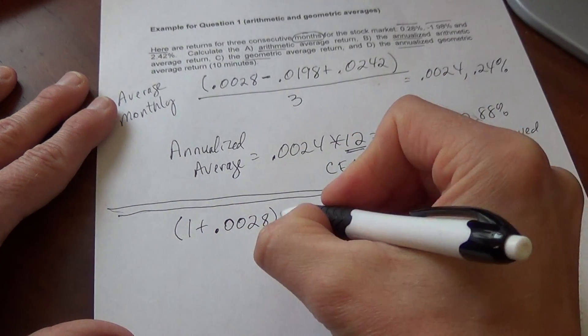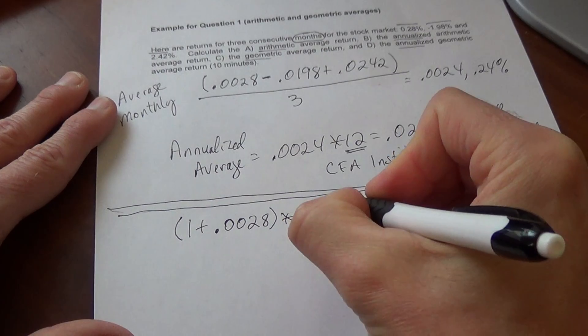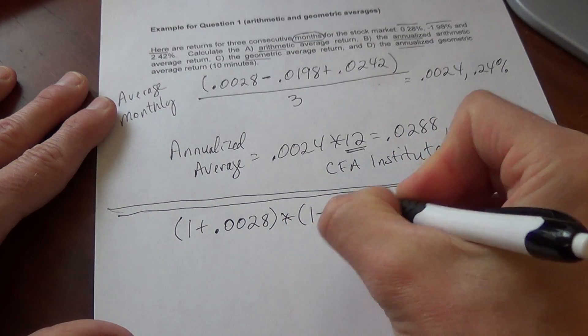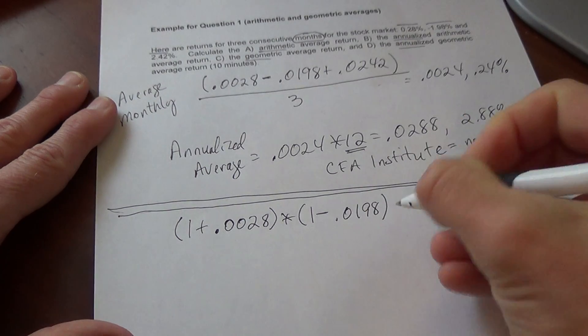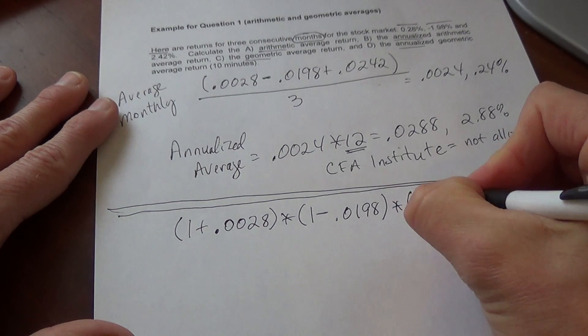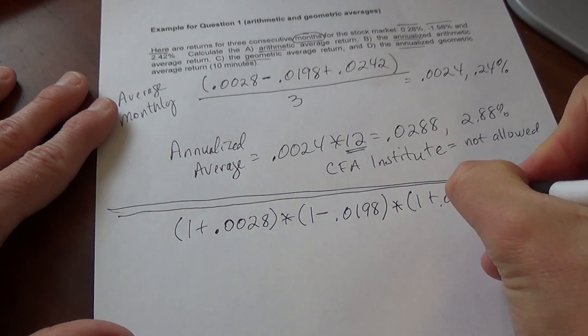You close the parentheses, you're going to multiply that by one plus the next month. The next month is a loss, so we'll take one minus 0.0198, close parentheses. And then multiply that by the third month, plus one. So one plus 0.0242.